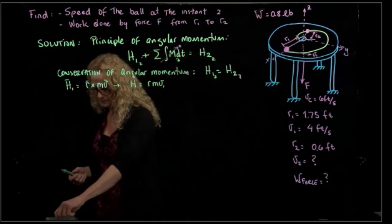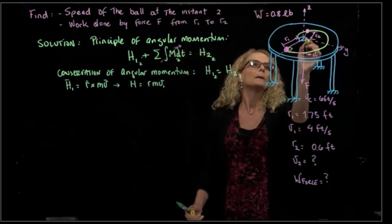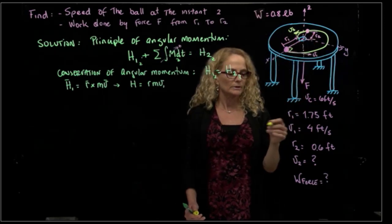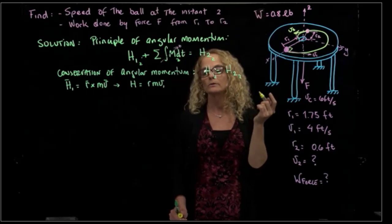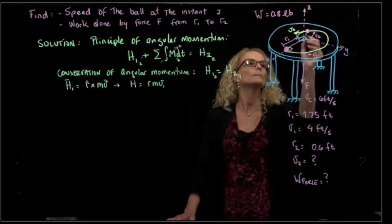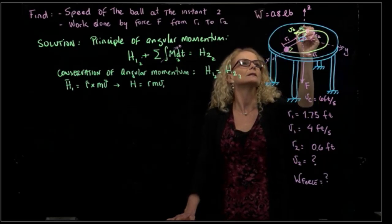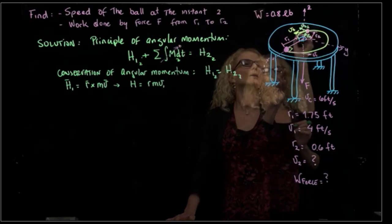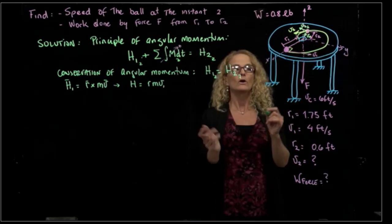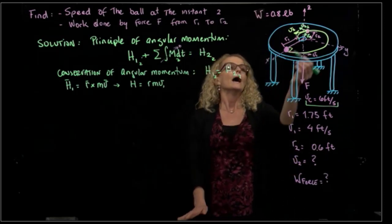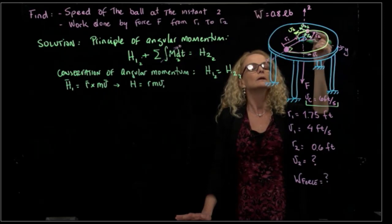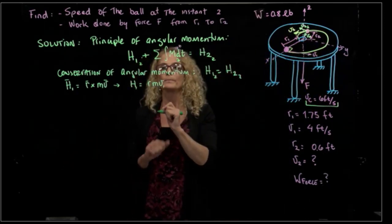In the first position, the velocity is perpendicular to the radius. But in the second position, the velocity V2 is parallel to the trajectory, which means it is not perpendicular to the radius. So we actually have two components: one velocity component that is perpendicular to the radius, and one that we call the radial velocity. The radial velocity is 6 feet per second — the constant pull speed of the cord.